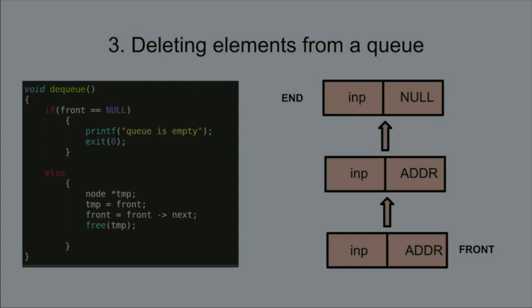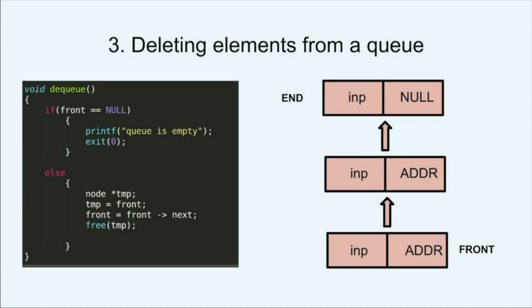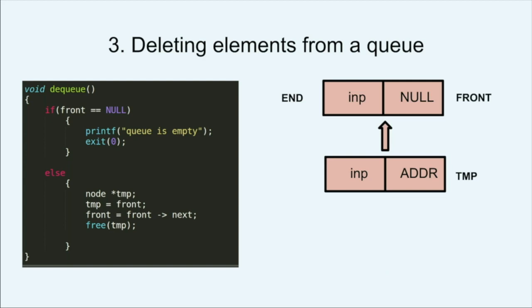Let's see how to delete elements from the queue. Upon each call to the function dequeue, the current front node is assigned as tmp and is made to point to the next node. Then the memory allocated to tmp is deallocated. This continues until there is no element left to delete, as front will then point to null.